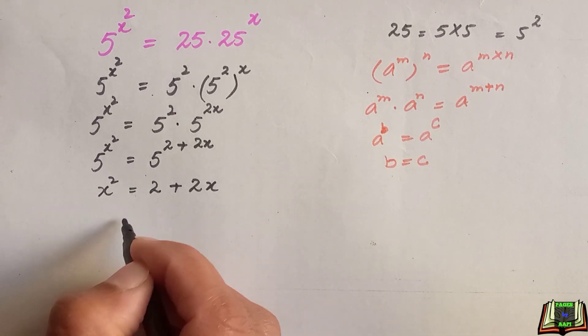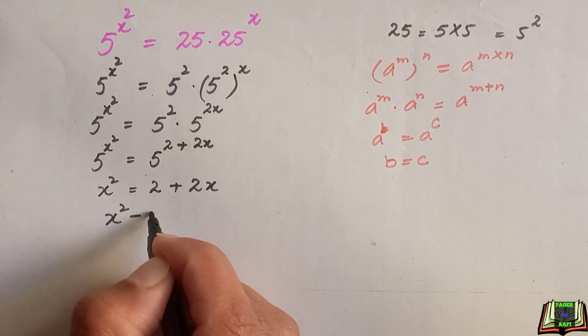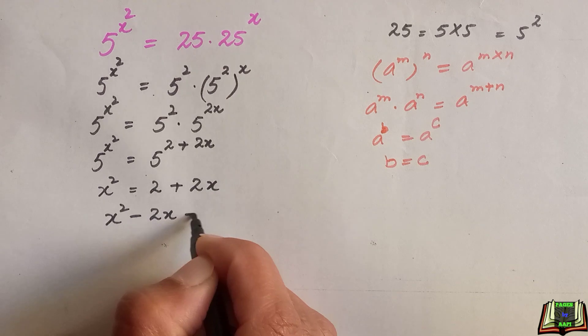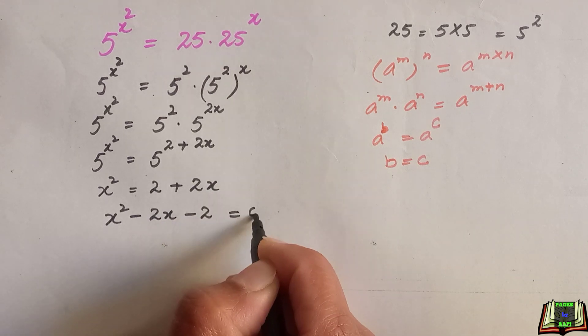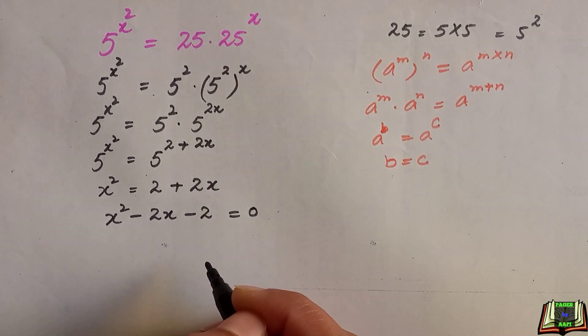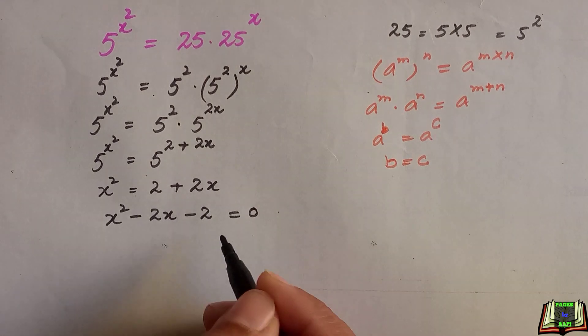If we move 2 plus 2x to the left hand side it will become negative, and after rearranging it's equal to x square minus 2x minus 2 is equal to 0.